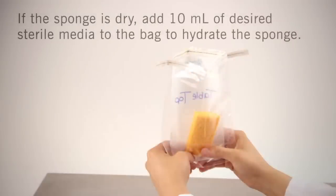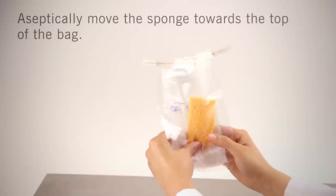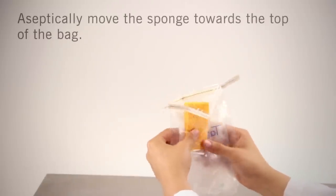If sponge and bag is ordered dry, add 10 milliliters of desired sterile media to the bag to hydrate the sponge. Holding the outside of the bag, aseptically move the sponge towards the top of the bag.